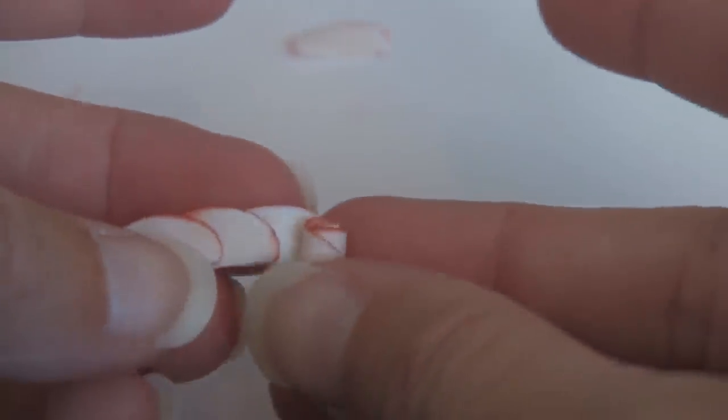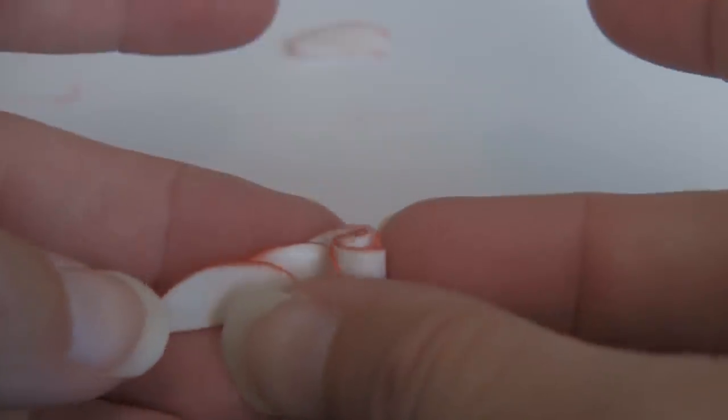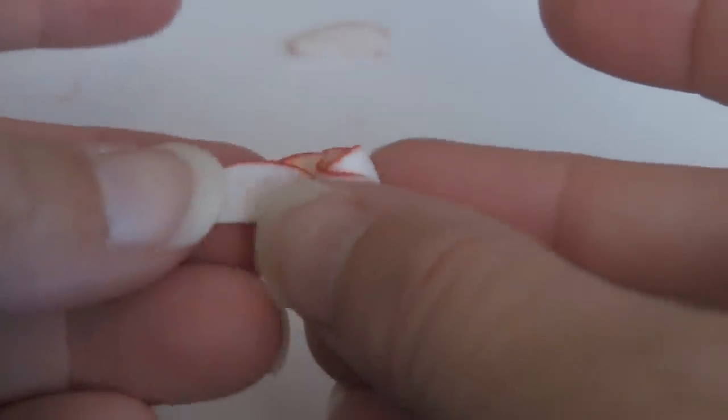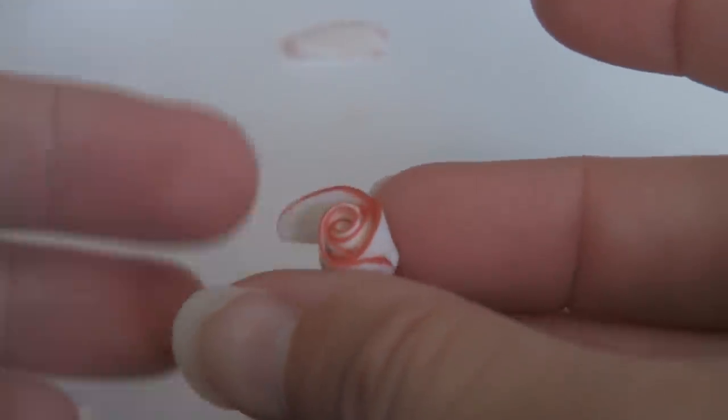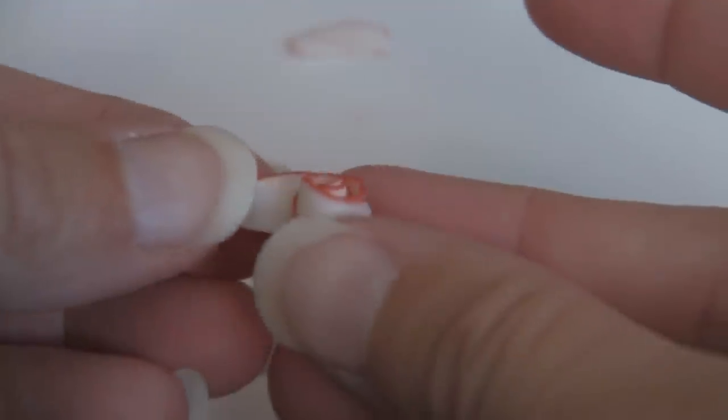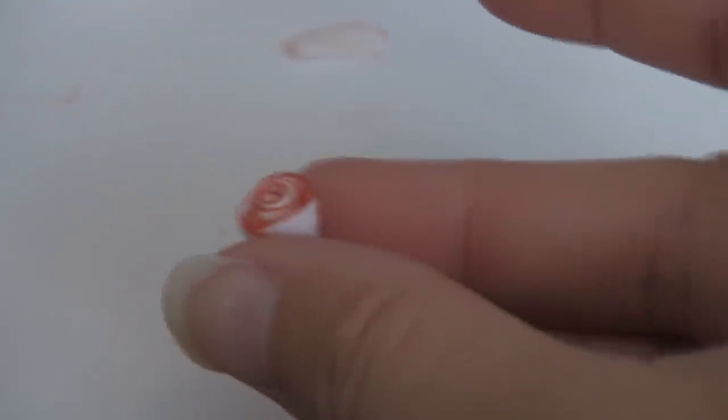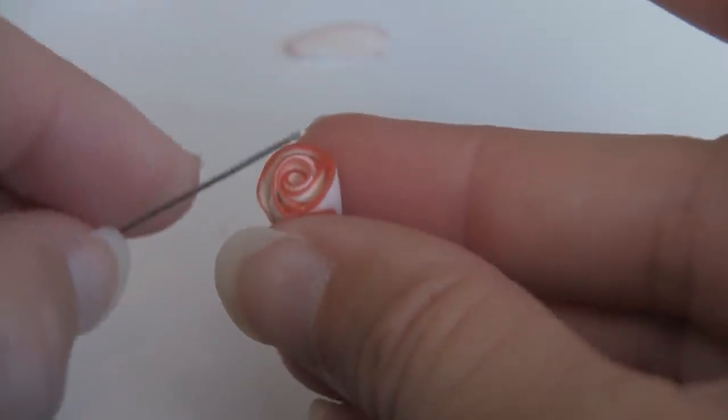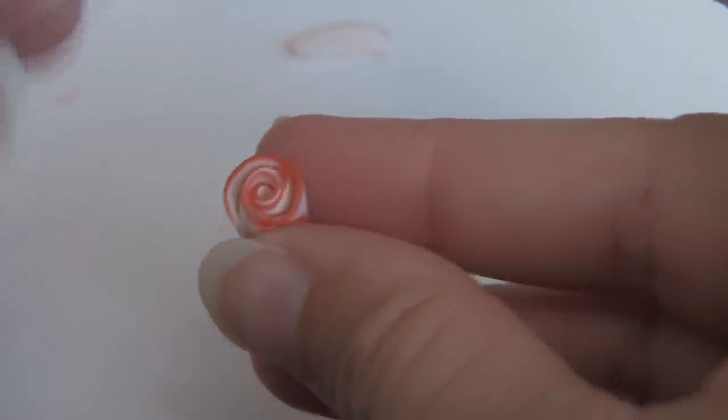This isn't supposed to look like a rose from the garden, this is supposed to look like an apple rose. I know that as I'm rolling them around here, I don't have the edges out. I don't have the petals folded outwards like a traditional rose.